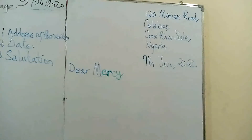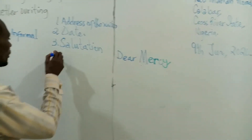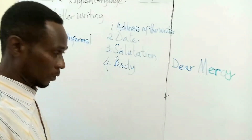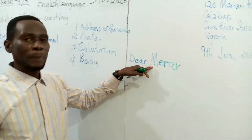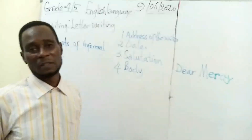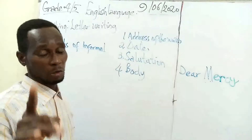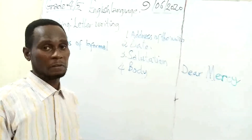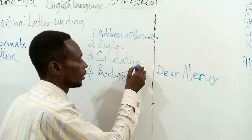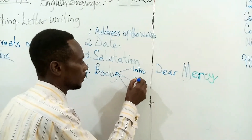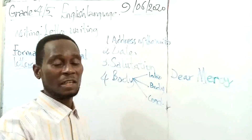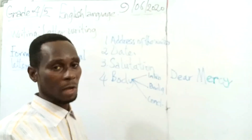So this is the salutation — it's always at the left hand side. After salutation, the next thing is the body of the letter. Number 4 — remember that we have 5 parts — number 4 is the body. The body of the letter is the part where you start giving the details, the reasons why you are writing this letter. The body has 3 parts: the introduction, the body proper, and the conclusion.